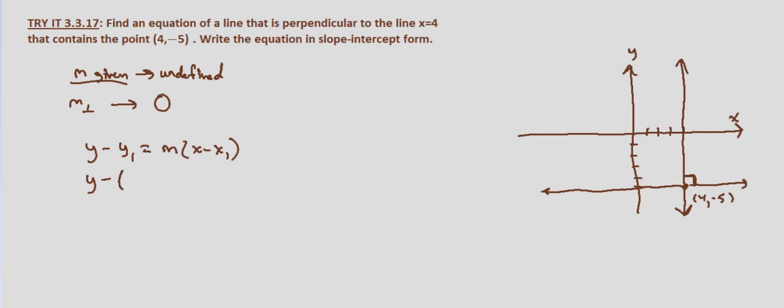y minus y1, that's -5, equals our slope which is 0 times (x minus 4). Well 0 times (x minus 4) is just 0. And then minus a negative becomes plus a positive, so y plus 5, subtract 5 from both sides, and we get y equals -5.